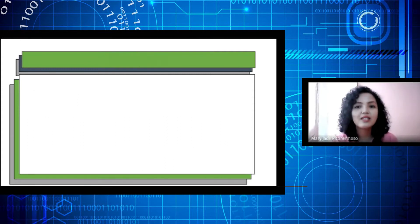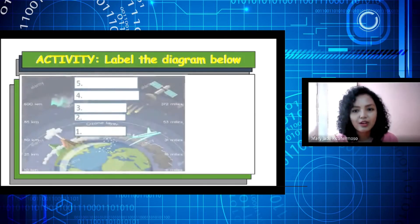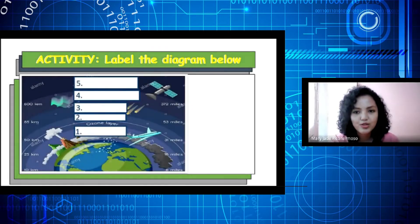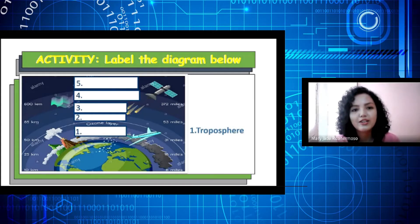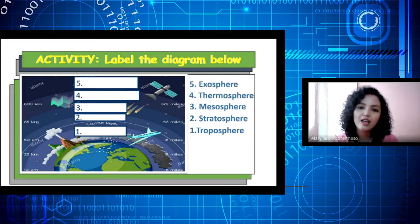Now, let's test if you learned something in our lesson today. Can you label the layers of the atmosphere in this picture? Starting from the lowest to the highest layer of the atmosphere. Go! You are right! The first layer is the troposphere. Second is stratosphere. Third is mesosphere. Fourth is thermosphere. And the last layer is the exosphere. Very good! You learned a lot!